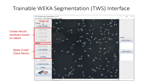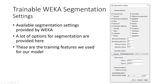Here are the TWS settings and training features. The available training features include Gaussian Blur, Sobel Filter, Difference of Gaussians, Membrane Projections, Variance, Mean, Maximum, Median, Anisotropic Diffusion, Kuwahara, and Laplacian. We did not change the values for membrane thickness, patch size, minimum sigma, and maximum sigma.